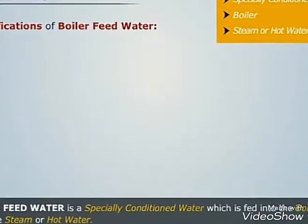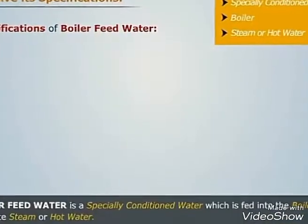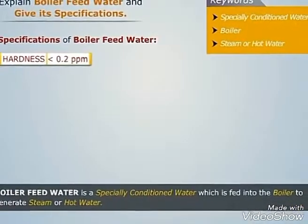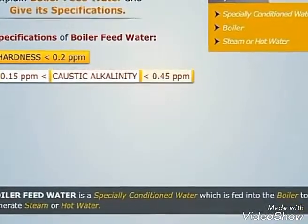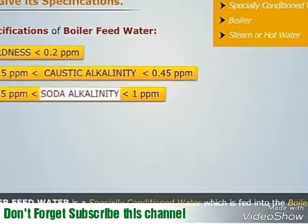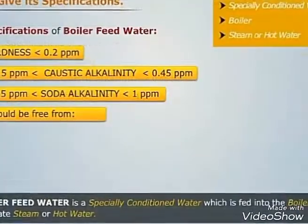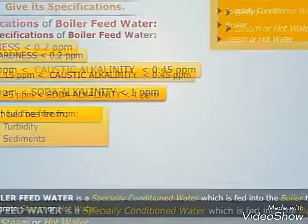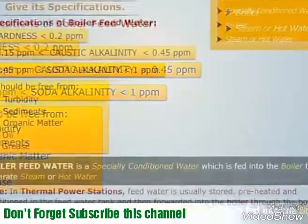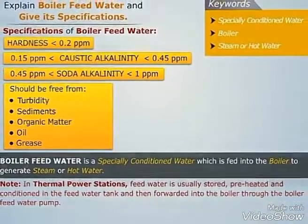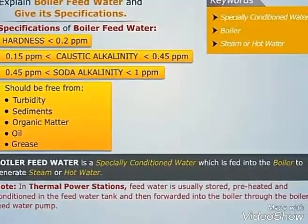Let us now discuss the specifications of boiler feed water. Before using the boiler feed water in the boiler, it should be made sure that it meets the following specifications: its hardness should be below 0.2 parts per million; its caustic alkalinity should be between 0.15 and 0.45 parts per million; its soda alkalinity should be between 0.45 and 1 parts per million; it should be free from turbidity and sediments; and it should be free from organic matter, oil and grease to avoid foaming. Note that in thermal power stations, feed water is usually stored, preheated and conditioned in the feed water tank and then forwarded into the boiler through the boiler feed water pump.